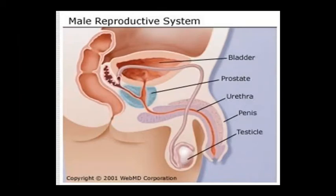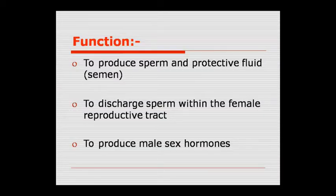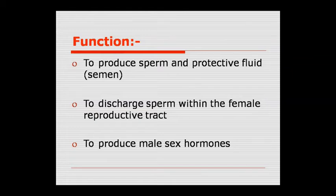Male reproductive system की structure में bladder, prostate, urethra जो tube-like structure है, penis, external genitalia और scrotum में descended testes देखे जा सकते हैं। इसका function है: sperm को produce करना और protective fluid बनाना जिसको semen कहते हैं। यह sperm को female reproductive tract के अंदर discharge करता है, और male sex hormone testosterone को produce करता है।